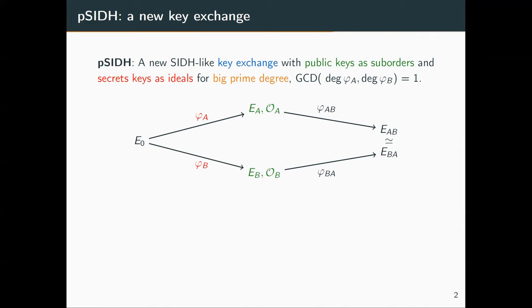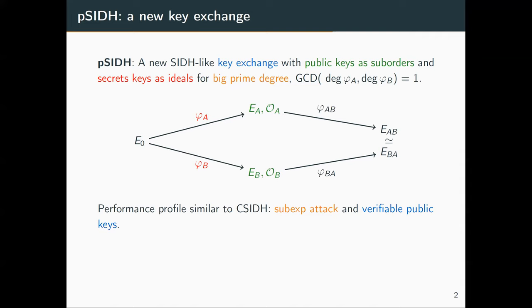For this protocol to be secure, it is going to be very important to have a big prime degree for phi_A and phi_B. The performance profiles are really similar to CSIDH. We have a quantum subexponential attack and a non-interactive key exchange thanks to a verifiable public key, because we also have a verification mechanism to check the integrity of the suborder.